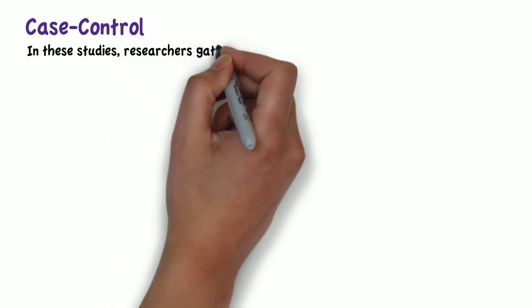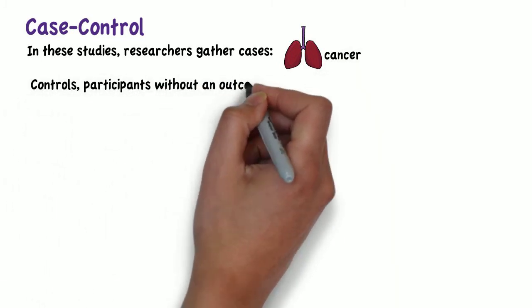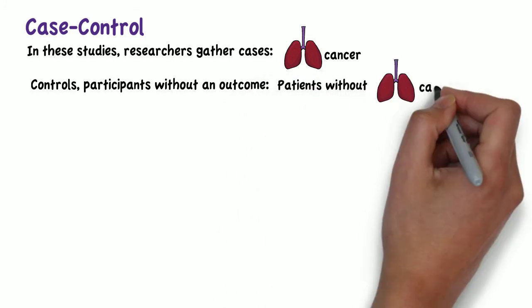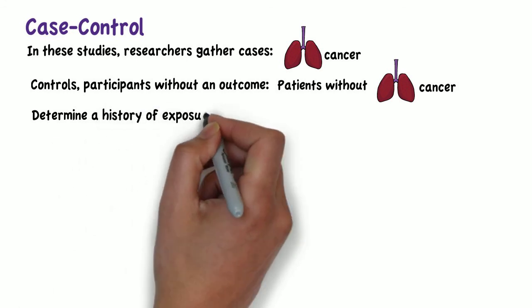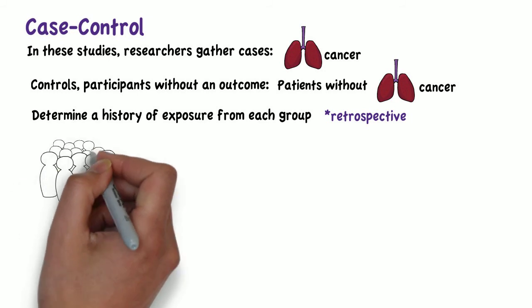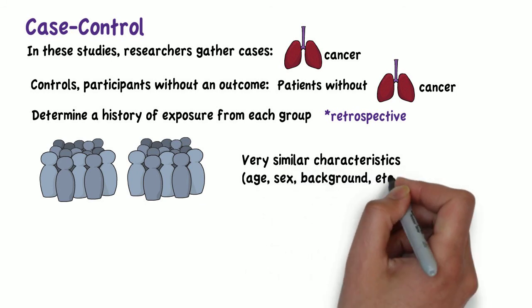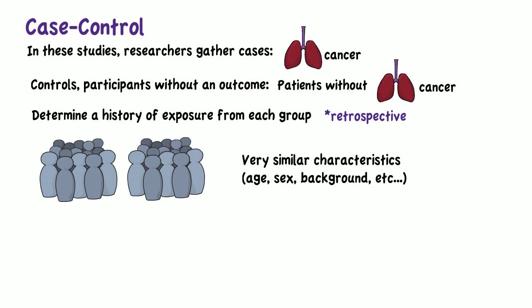In case control studies, researchers gather cases — patients with an outcome such as lung cancer — and controls — participants without that outcome — and then try to determine a history of exposure from each group. Case control studies are therefore retrospective. Researchers try to find differences in exposure between the two groups, and it is important that the two groups have very similar characteristics such as age, sex, and background, so as not to introduce confounding factors.